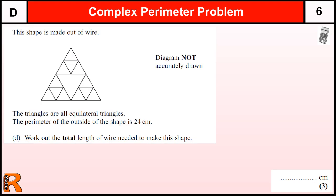Here's part D of this question. We've got the same shape. Now we're told it's made out of wire, all the triangles are equilateral, that means all the sides are the same. The perimeter of the outside of the shape is 24 centimeters. Work out the total length of wire needed to make the shape. So if we can work out the length of one of these pieces, we can count them all up and multiply by the length of one.